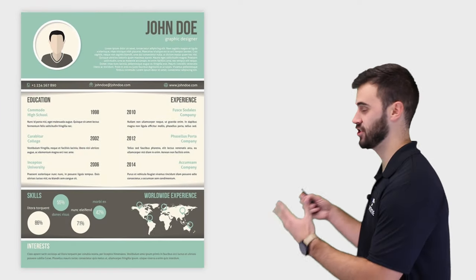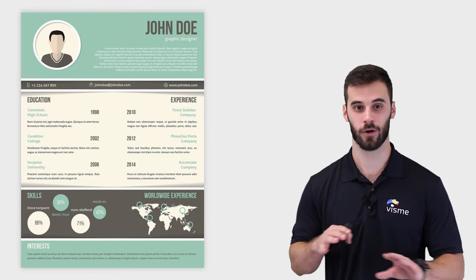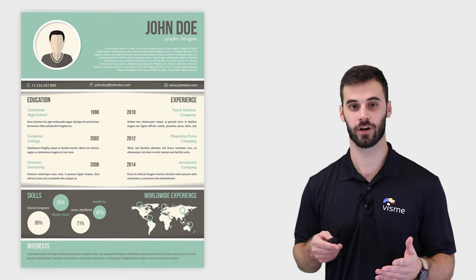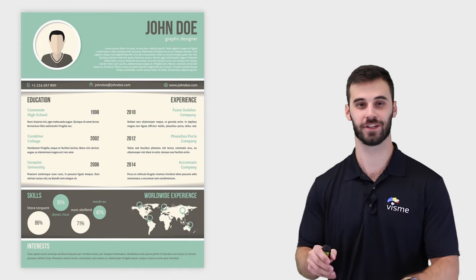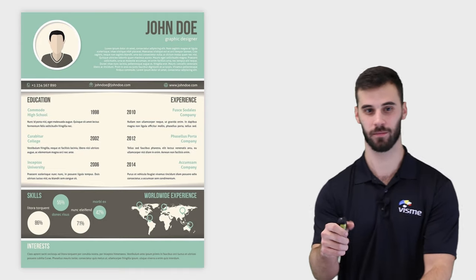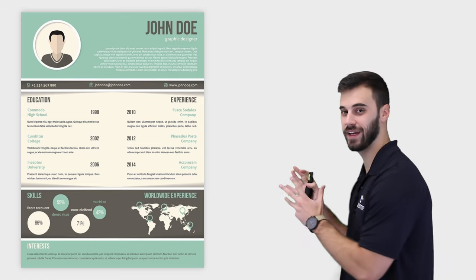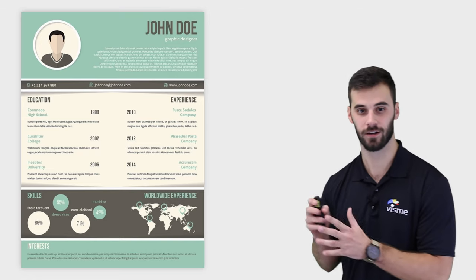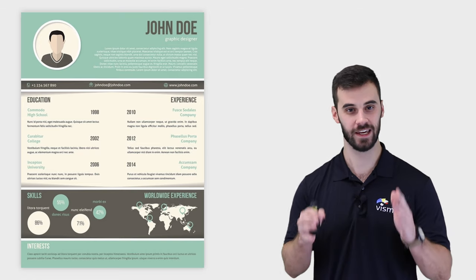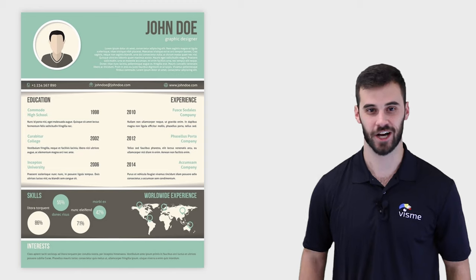In comes John Doe and everything is laid out perfectly. His name is the biggest, his titles are in bold, and I'm cruising through this resume like a ship on the way to the Bahamas. Also don't forget the color — John applied visual hierarchy here and he has the job.